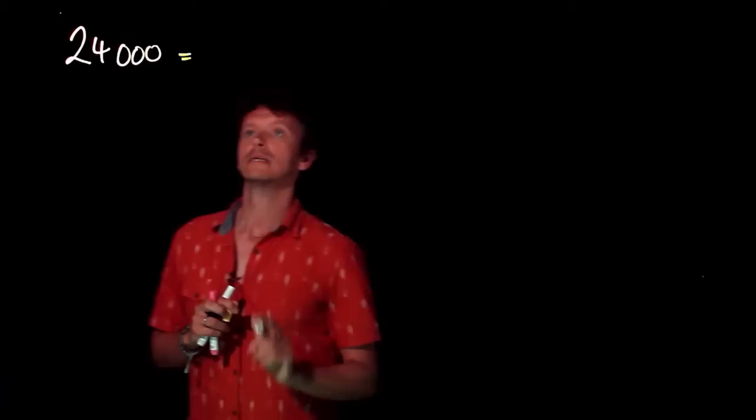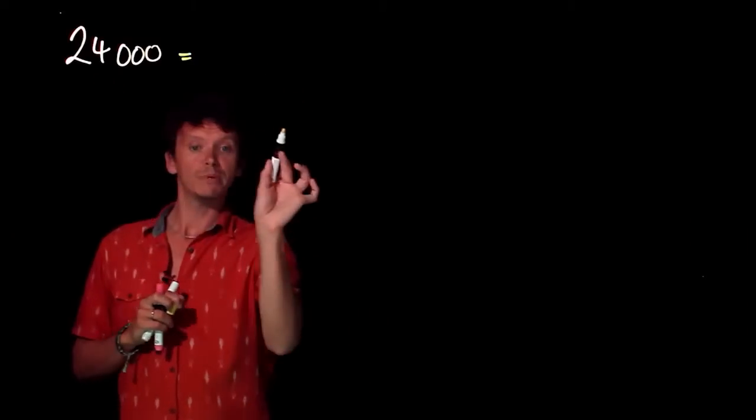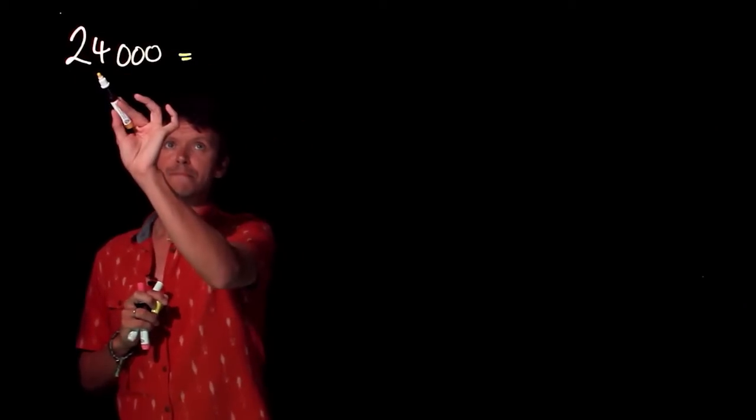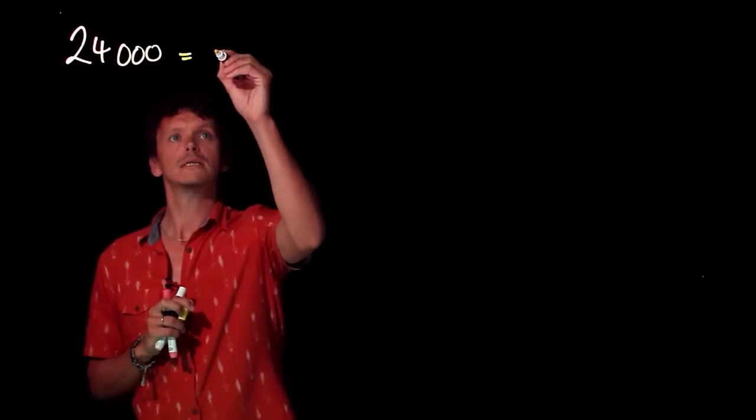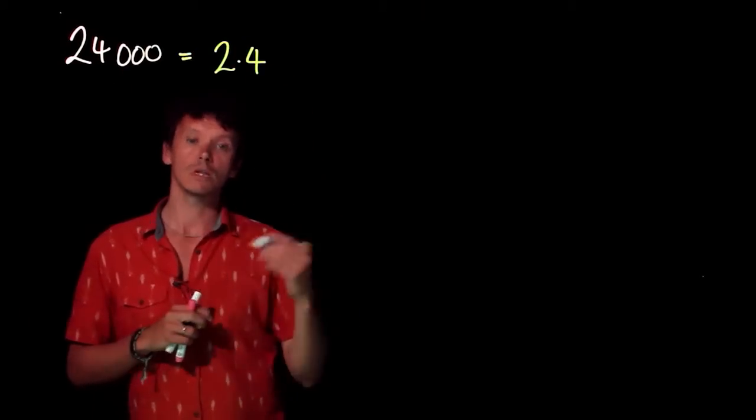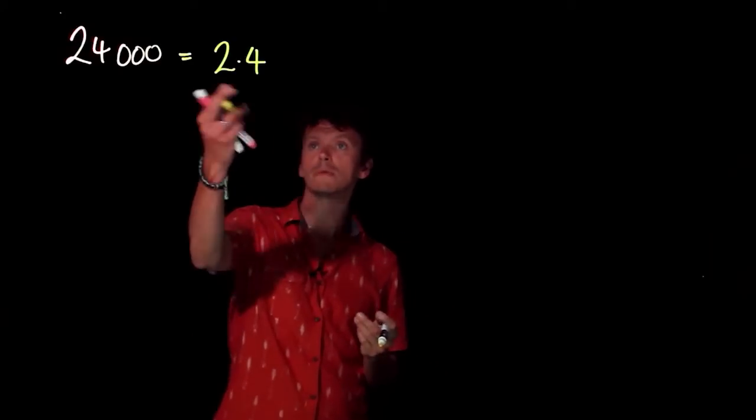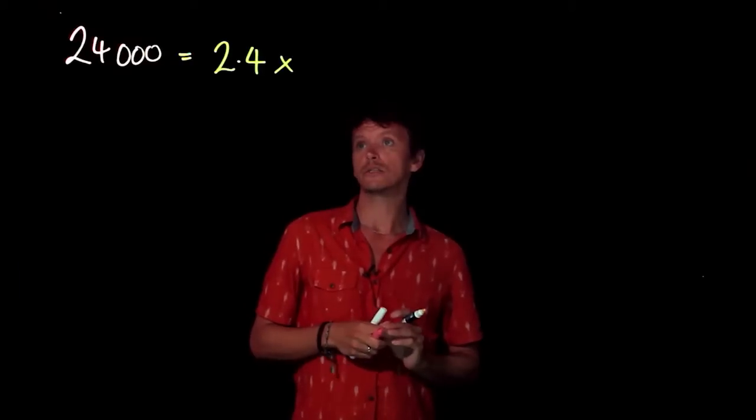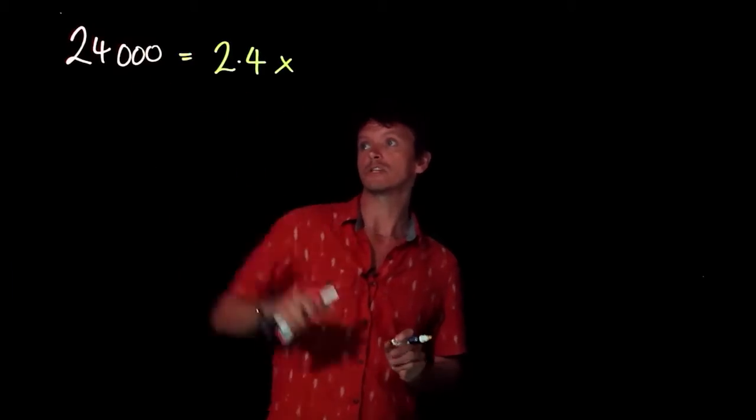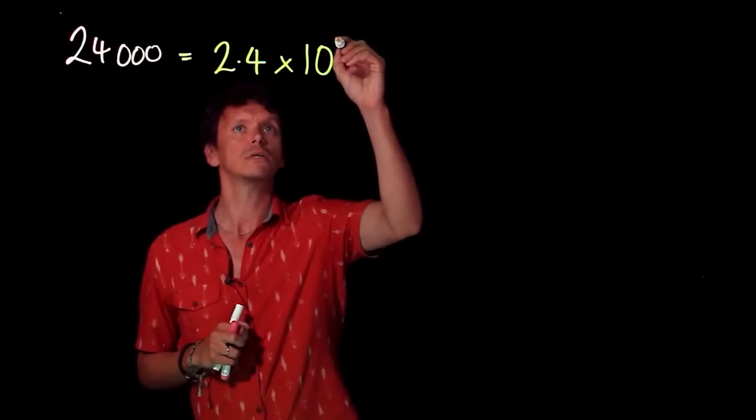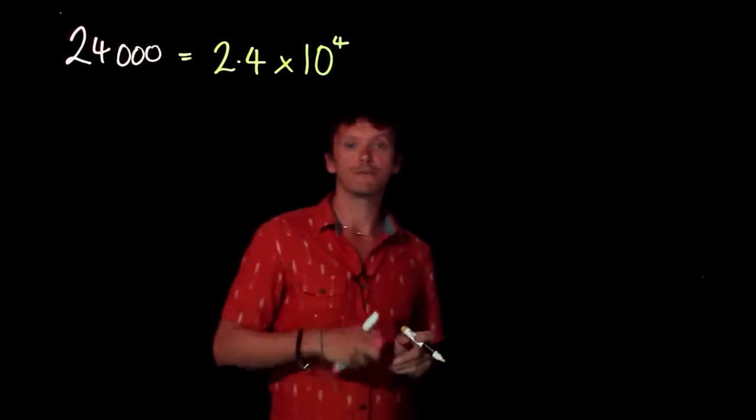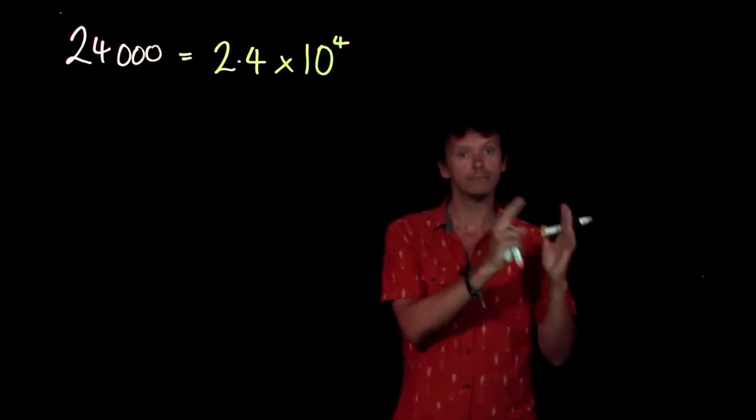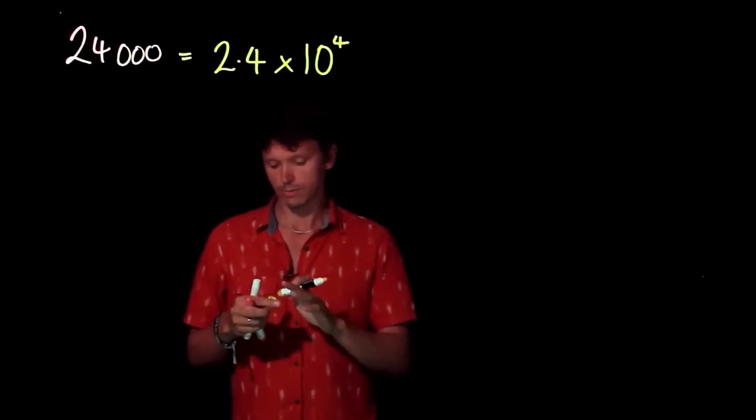The second number is going to be a power of 10, and the first number has got to be 1 or more but also must be less than 10. So in this case, the first number is 2.4. We're saying what power of 10 do we need to multiply 2.4 by to give us 24,000? That was 2.4 times 10 to the 4, which is 2.4 times 10 times 10 times 10 times 10.